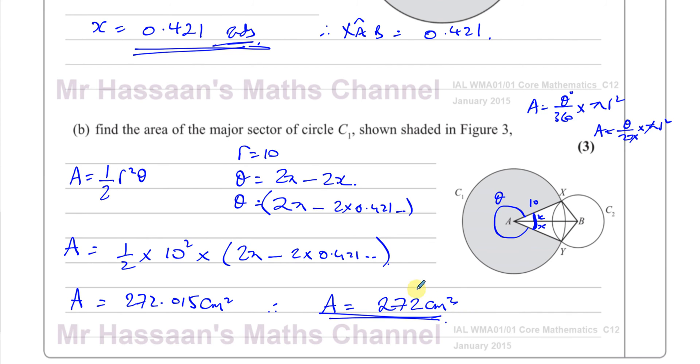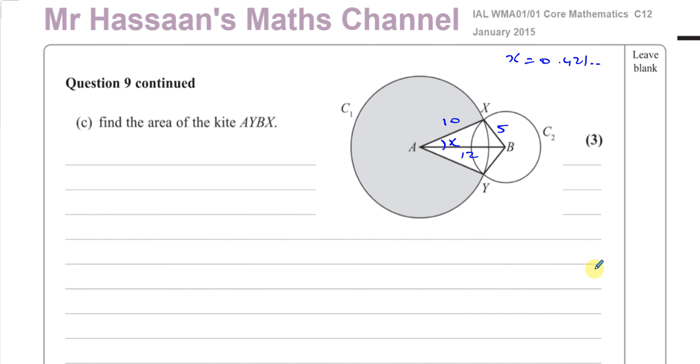Okay, now for part C. It says find the area of the kite AYBX. A kite is made up of two congruent triangles.